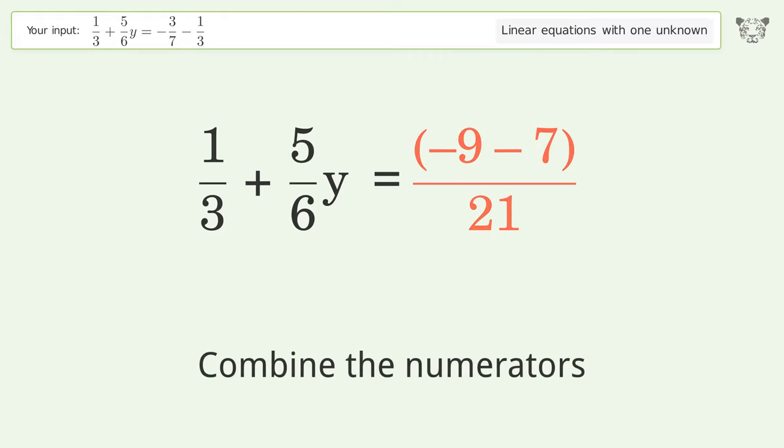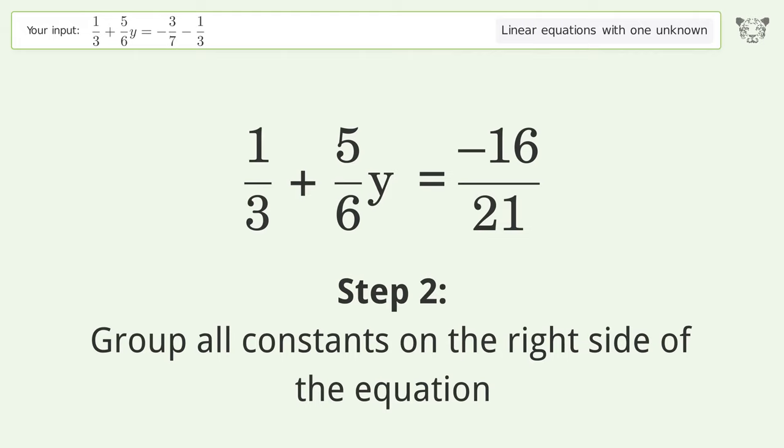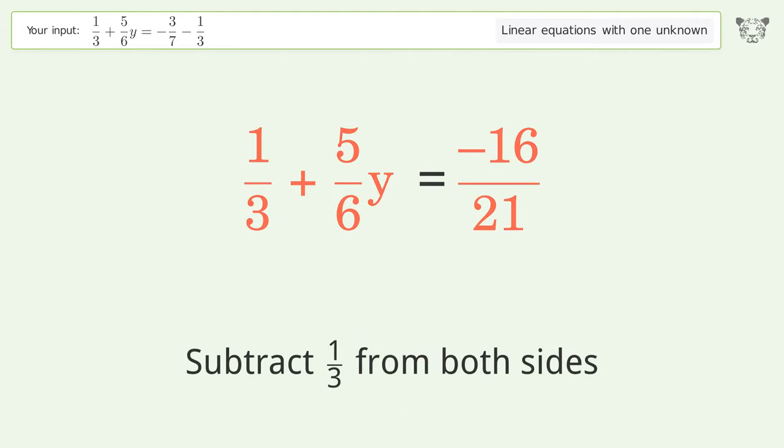Combine the numerators. Group all constants on the right side of the equation. Subtract 1 over 3 from both sides.